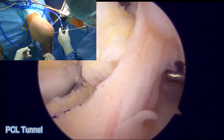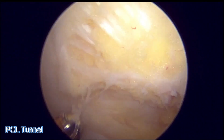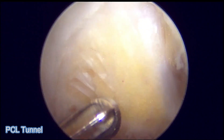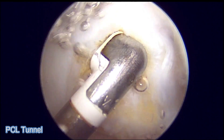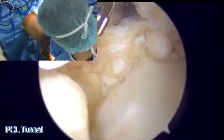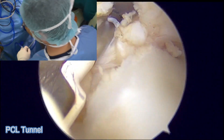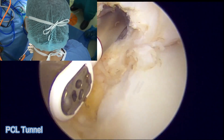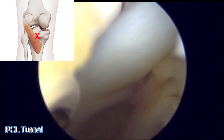To create the PCL tunnels, we first move back to the anterior portals. The PCL remnant is identified and the tunnel is marked at the center close to the cartilage. We go back to the posterolateral portal to visualize the location of the tibial tunnel just above the popliteus muscle belly.